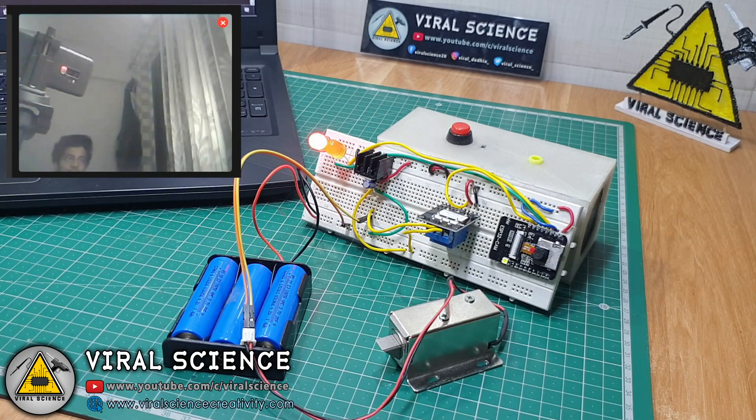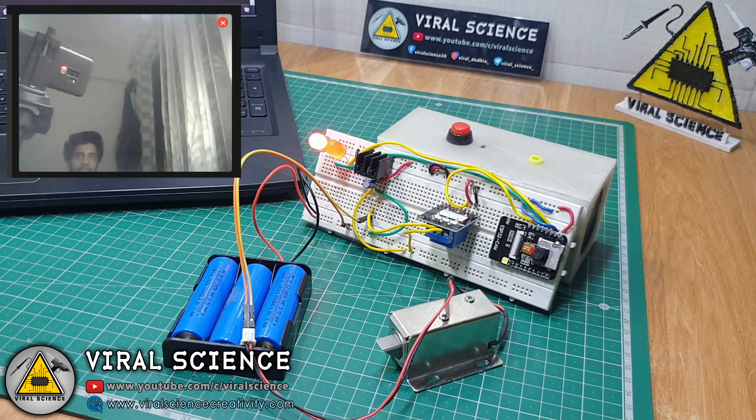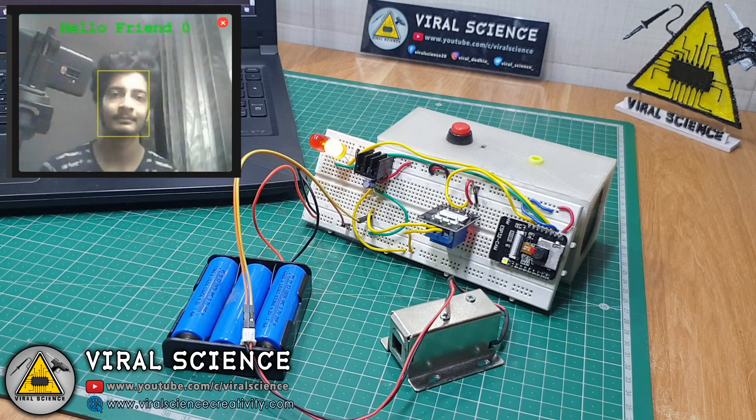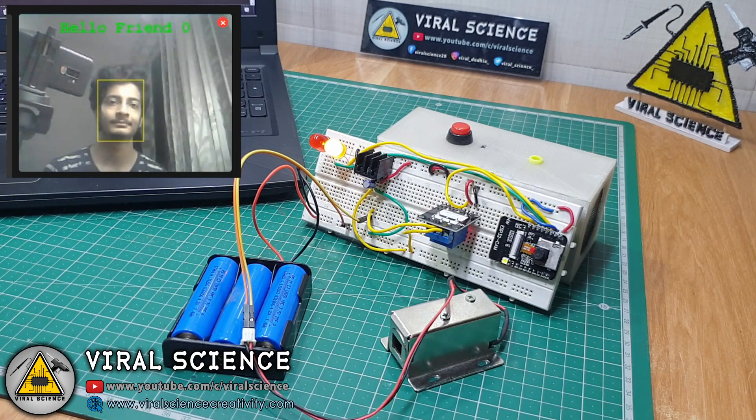So now, when the module will find the similar face, it will turn on the relay module and the solenoid lock will open for 5 seconds. You can even enroll multiple faces.